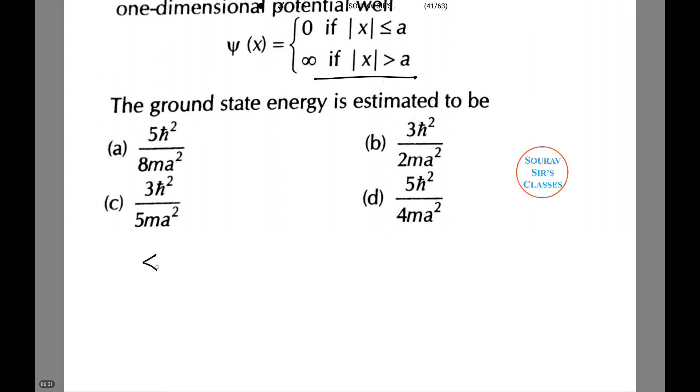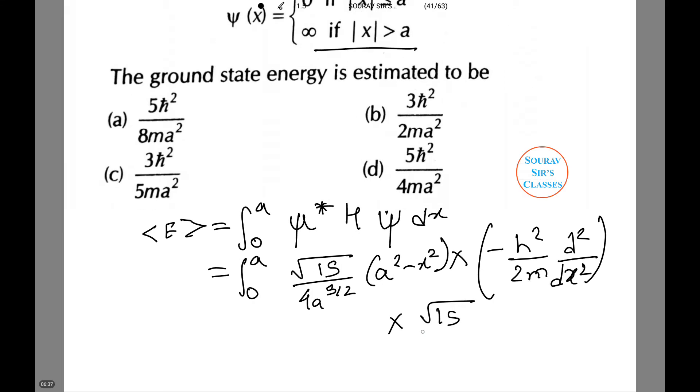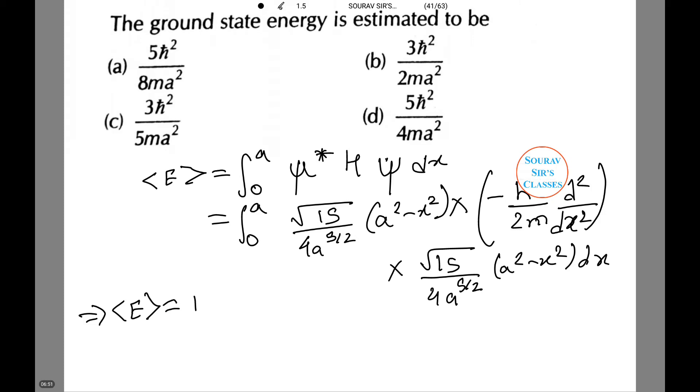E equals ∫₀ᵃ ψ*Hψ dx, which equals ∫₀ᵃ √(15/4a⁵/²)(a² - x²) into (a² - x²) dx. Or E equals (15/16a⁵) times (-ℏ²/2m) ∫₀ᵃ (a² - x²) into (-2) dx.